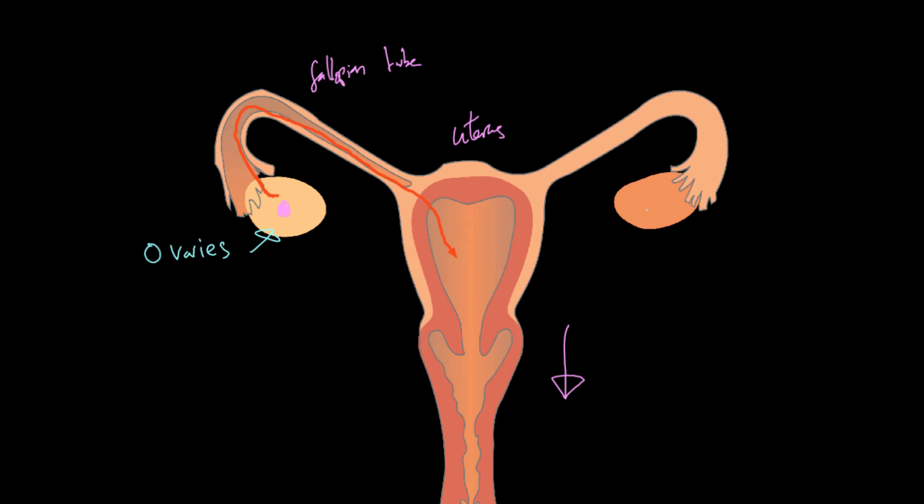Now this process is completely controlled by the endocrine cycle because there are three key hormones that you need to know. The first one is FSH. It's fine for you to just remember it as FSH but it stands for Follicle Stimulating Hormone. And FSH is produced in the pituitary gland.